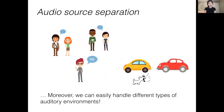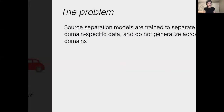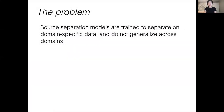Moreover, we can easily handle different types of auditory environments, even though we actually employ different auditory cues in these different settings. However, existing deep learning algorithms for source separation are trained on specific domains and do not generalize to new ones out of the box. Using a model trained to separate overlapping voices will not produce usable results when applied to separate environmental sounds. Practically, this means that the end user must know enough about each model's training to select the appropriate model for a given audio mixture, which limits deployment and imposes a bottleneck on adding source separation to an automation chain.